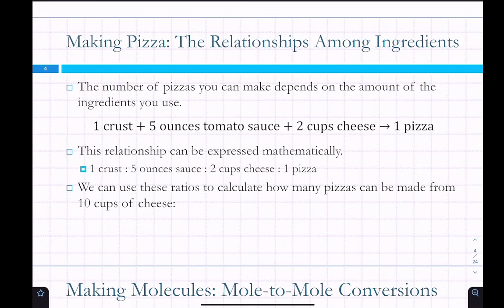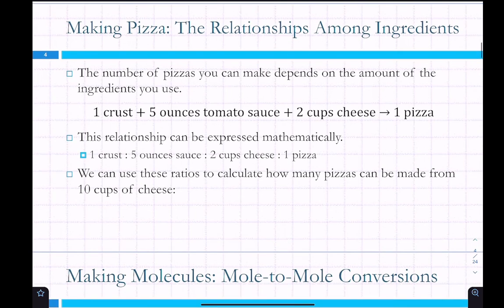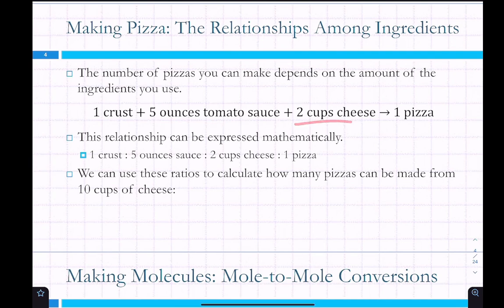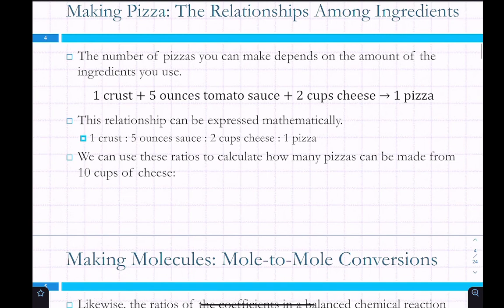We're going to use the analogy of making pizza. For this cheese pizza recipe, you need one crust, five ounces of tomato sauce, and two cups of cheese to make one pizza. We can express this relationship mathematically as one crust, five ounces of sauce, two cups of cheese equals one pizza. That's a complex ratio.